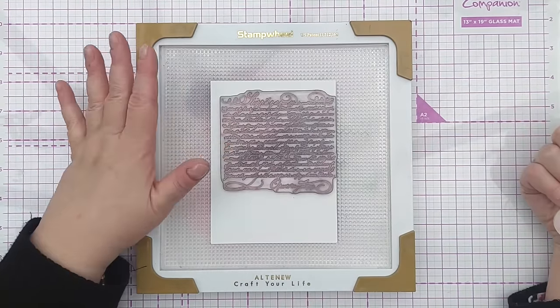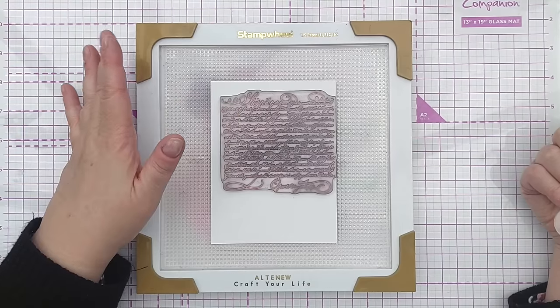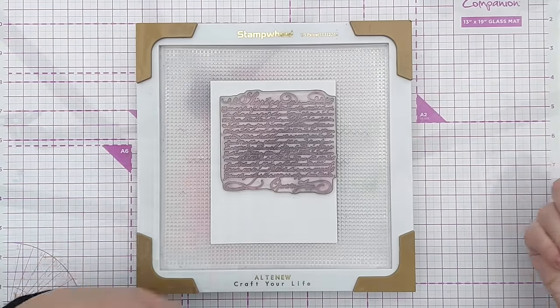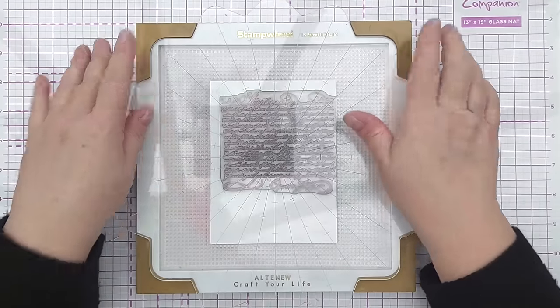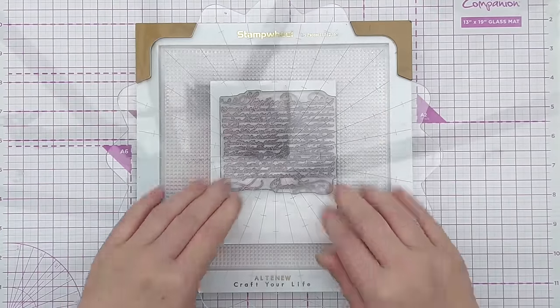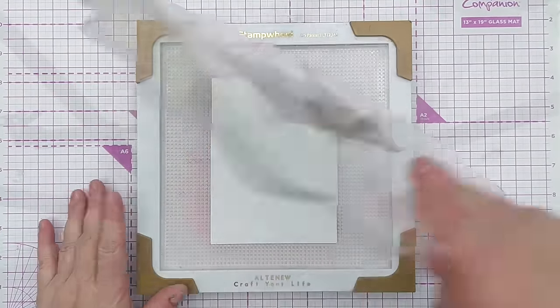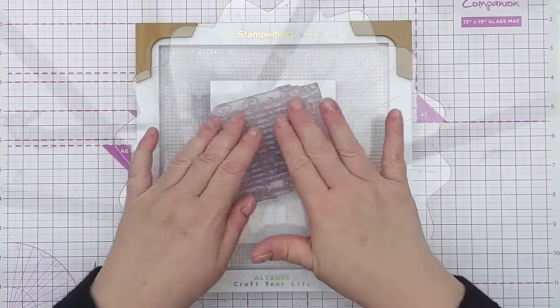I've got this script mixed media stamp here, it's unreadable, it's just to create some texture, some writing texture on my mixed media, and I'm using a stamp positioner because it's quite an intricate stamp and I want to get a good impression.